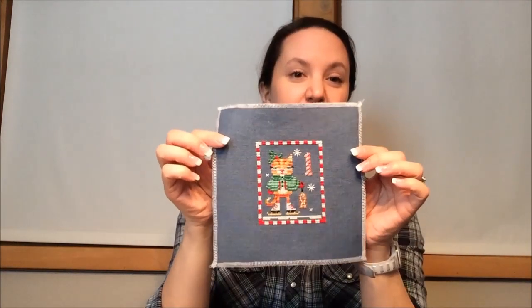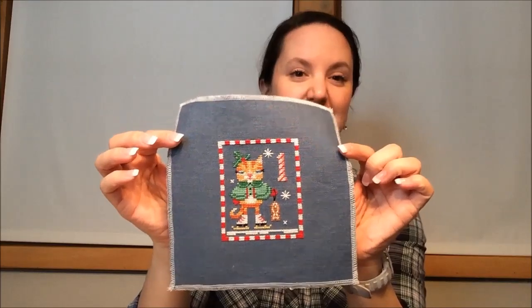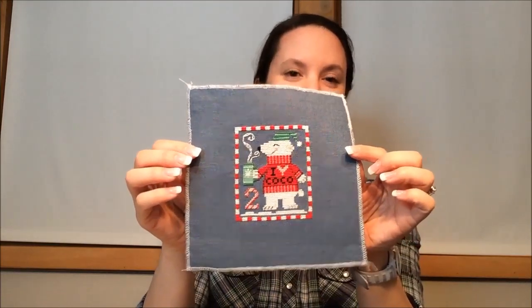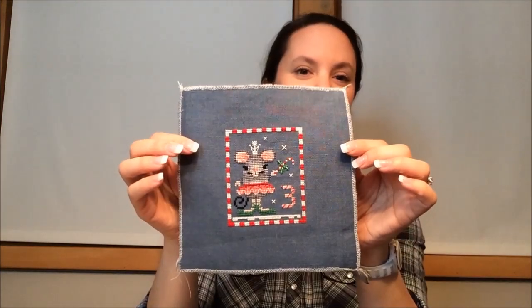These next five, three of them you've seen before, and two of them are new for December. So these are my Brooks Books Advent Animals series, I finished the first five. So here's number one, that's Katie Kitty, number two is Peter Polar Bear, and you've seen these before in other videos. Number three is Mary Mouse.